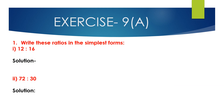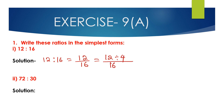We will solve question number 1: Write these ratios in the simplest form. First bit is 12 is to 16. We can write 12 is to 16 as 12 divided by 16, where 12 is the antecedent and 16 is the consequent. Between 12 and 16, 4 is the common factor. So divide the antecedent 12 by 4 and the consequent 16 by 4. 12 divided by 4 is 3 and 16 divided by 4 is 4. So 3:4 is the simplest form of the ratio 12 is to 16.